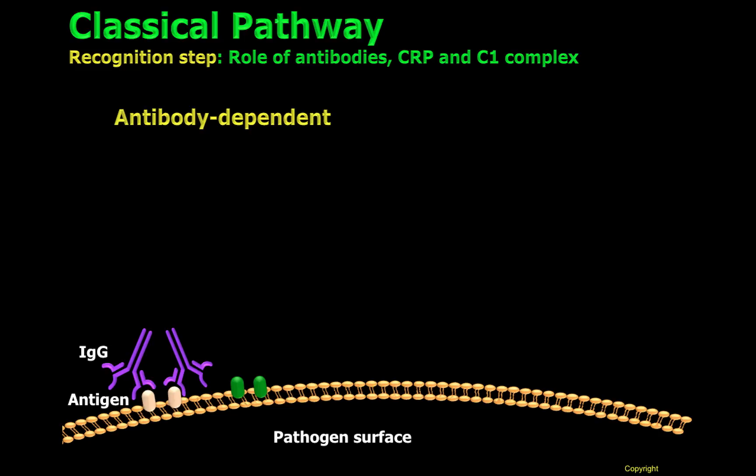Since the classical pathway requires antibodies, which are produced by B cells, in order to start, the classical pathway is considered to be the link between the adaptive and the innate immunity. In this example, we can see that two immunoglobulins, two IgGs, are recognizing antigens on the cell surface of pathogens. When two IgGs are close enough, C1 will be able to bind to these antibodies, and as a consequence, recognizing indirectly the pathogen.